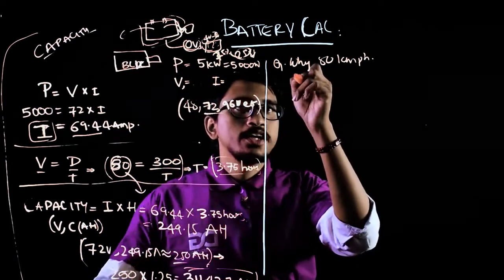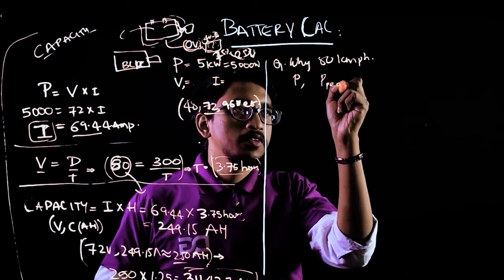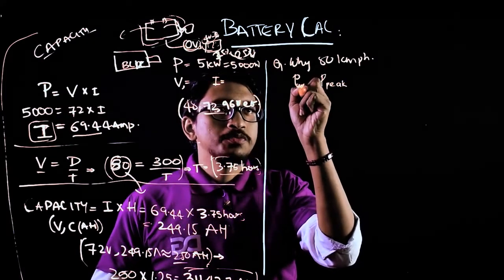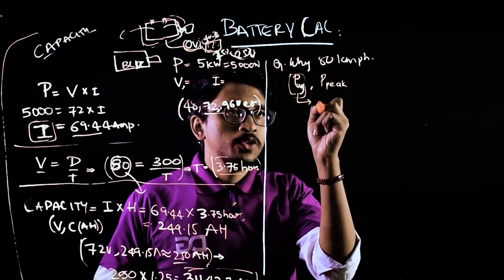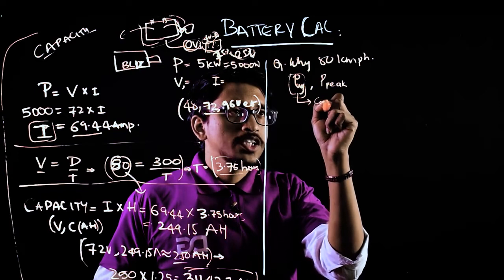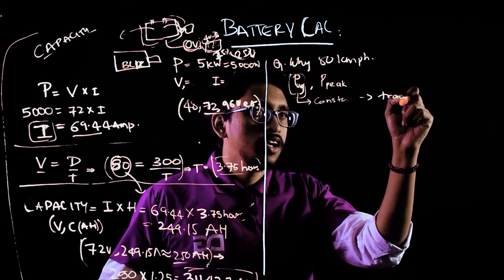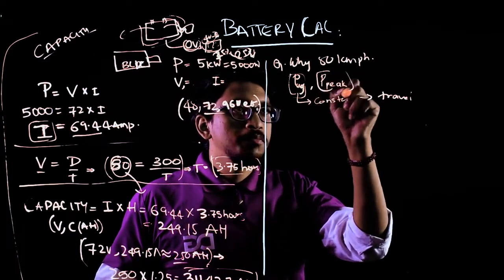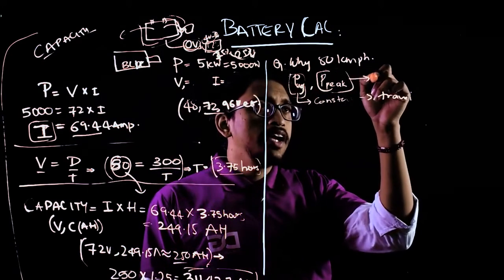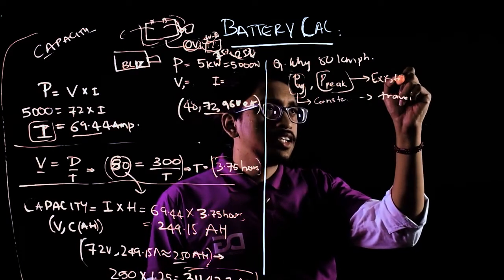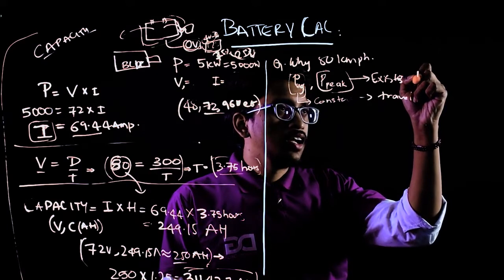There are two powers - one is peak power, one is average power. This average power is constant throughout the traveling of the vehicle. But when we talk about peak power, it will come to existence only when the highest load is on the vehicle.